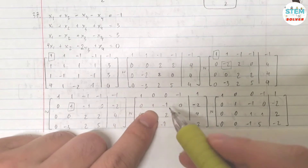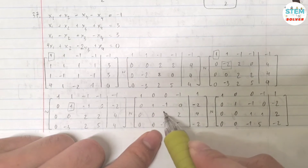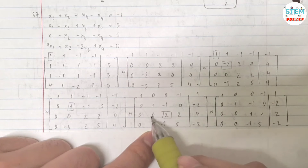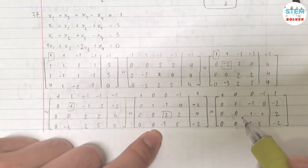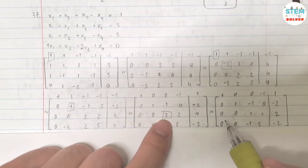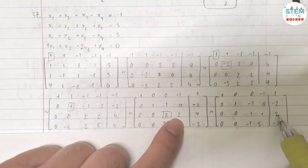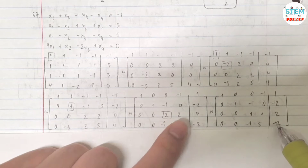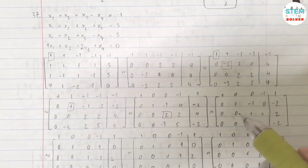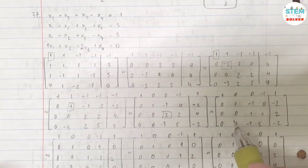Now the next step: we need to get the next pivot in the third column. That means we divide the third row by 2, giving us: 0, 0, 1, 1, 2. Then rewrite the first, second, and fourth rows unchanged. Here is our new matrix.